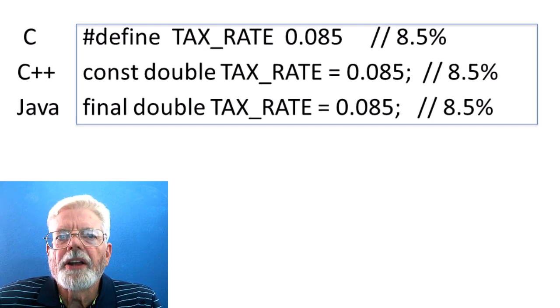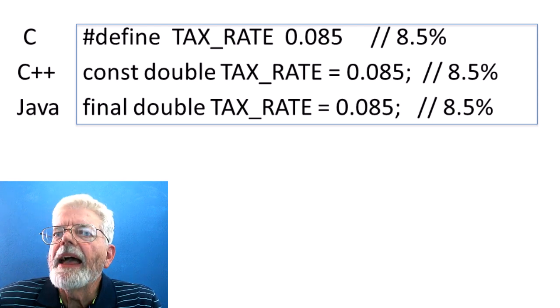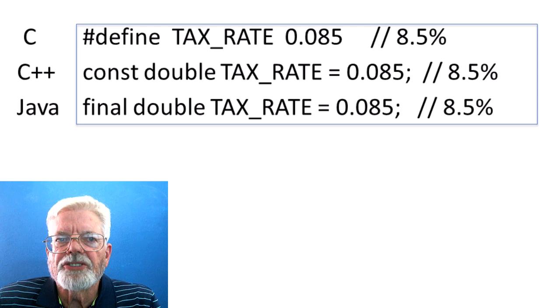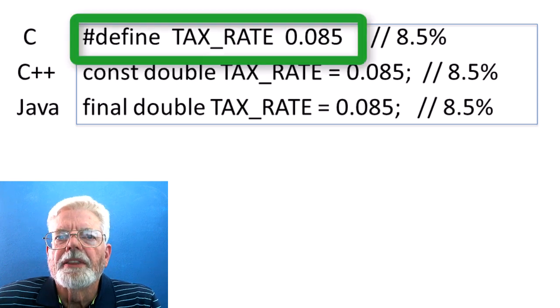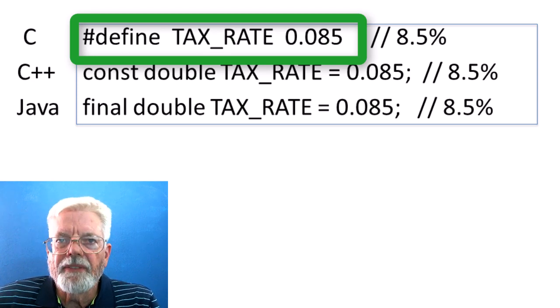Here are examples of defining constants in C, C++, and Java. As you can see, the syntax is different for each language. The C language uses the pound define statement and does not use the equal sign or a semicolon at the end of the statement.